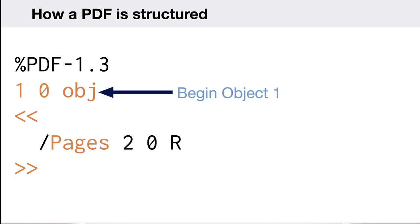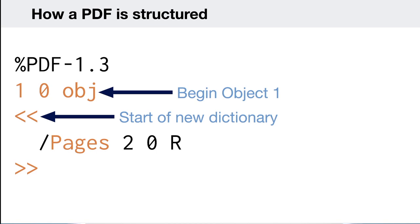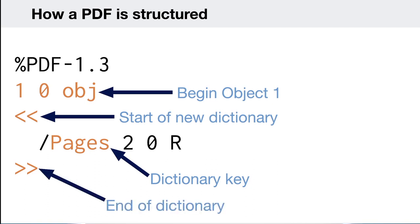Here's what an object looks like in PDF code. This is the first object — number one, revision zero — and then the keyword for the start of the object. This is a dictionary; dictionaries begin with those characters. We have a dictionary key, in this case 'pages', which refers to the number of pages in the document. And you'll notice '2 0 R' — this is a reference in PDF code, allowing you to link to other objects. So this is saying go to object number two, revision zero, and link to that object. That's a super basic intro to how a PDF object is structured, but it gives you enough to understand the rest of this talk.